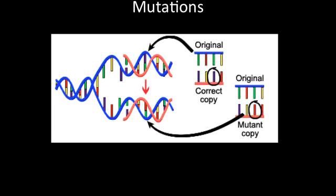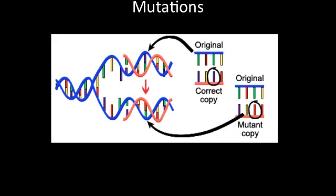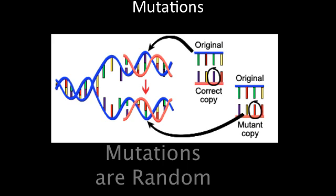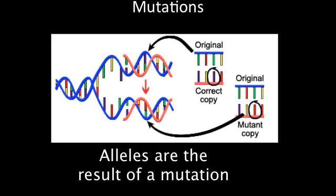Alleles, alternate forms of a gene, are created through mutation in the genetic code. Sometimes these alternate alleles create an alternate phenotype. Mutations are random changes in the genetic code. All that is needed to make an allele of a gene is a change in one nucleotide — a single addition or deletion in one nucleotide can alter the expression of a gene.